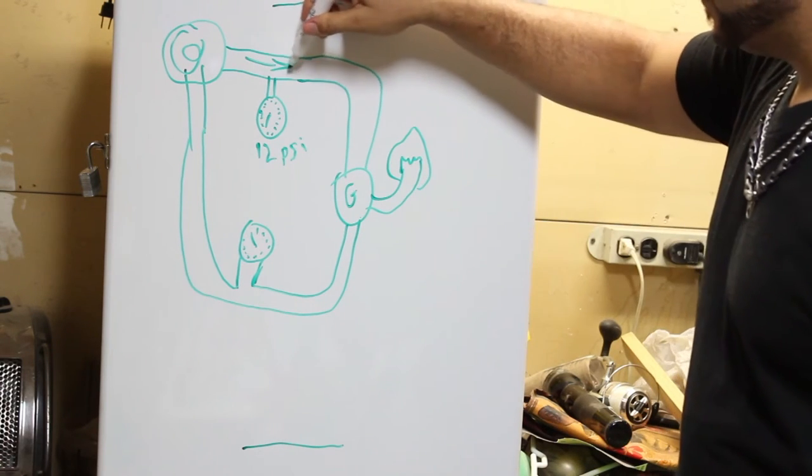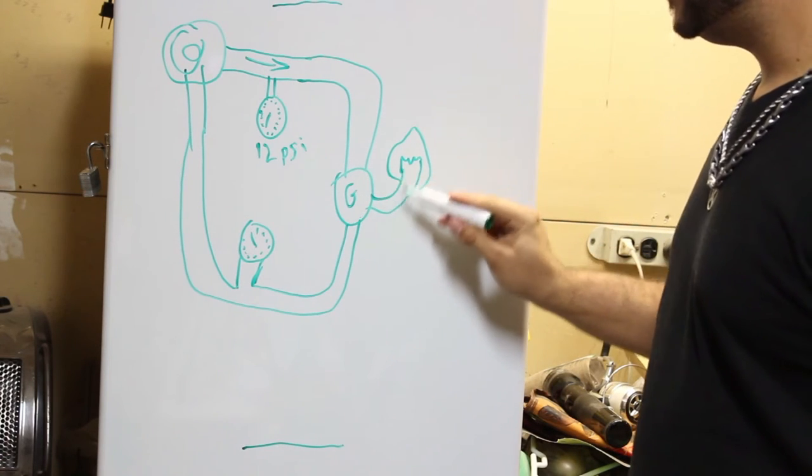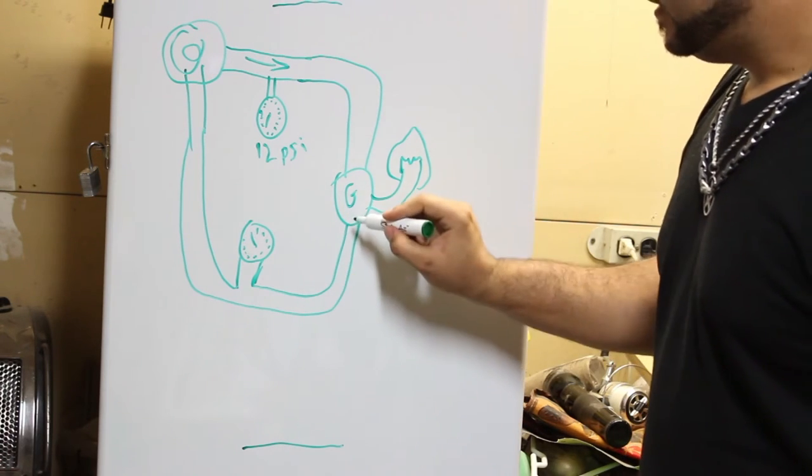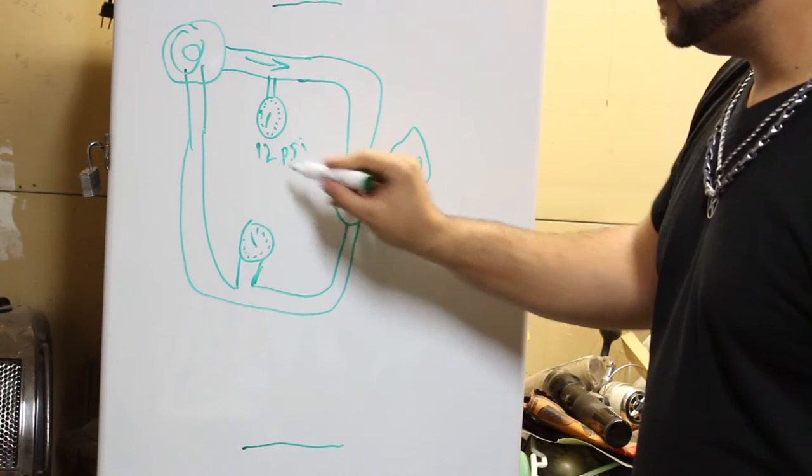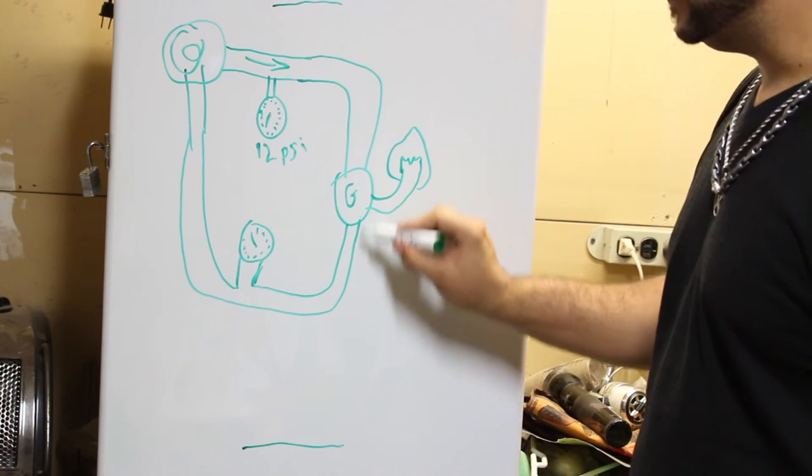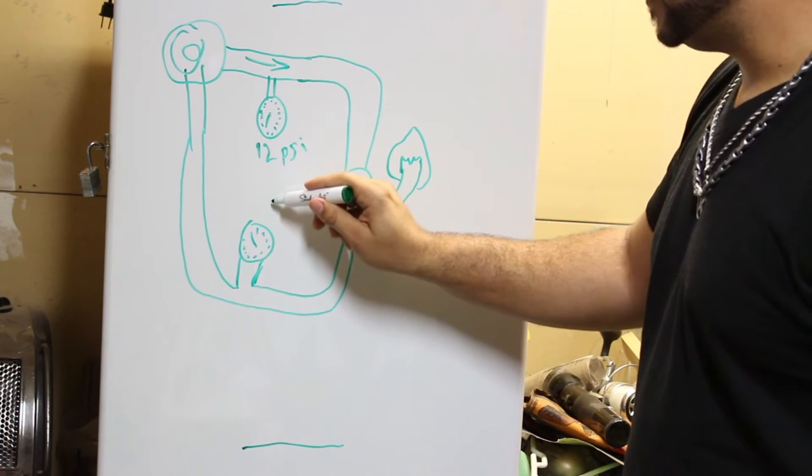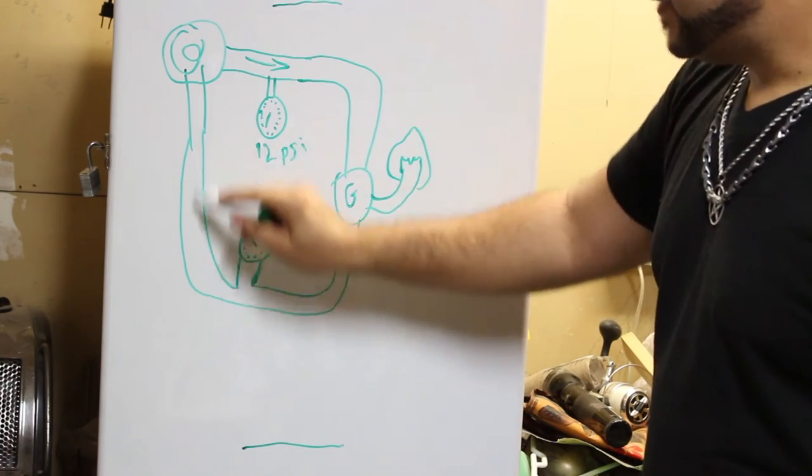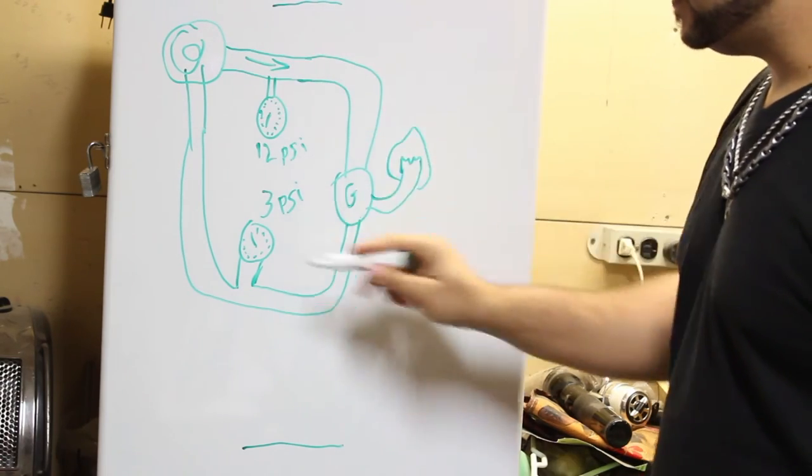And we have 12 PSI of pressure coming down here. The generator uses some of that pressure, and because this is - it's basically adding resistance to the circuit. As it comes through here and we have another thing telling us the pressure, the pressure will be different from here because there is something in the way of the path using some of that energy. So the pressure will decrease. Let's say now it's going to be at let's say 3 PSI. It goes back to the source and then gets repressurized and pushed back out, and the cycle continues.